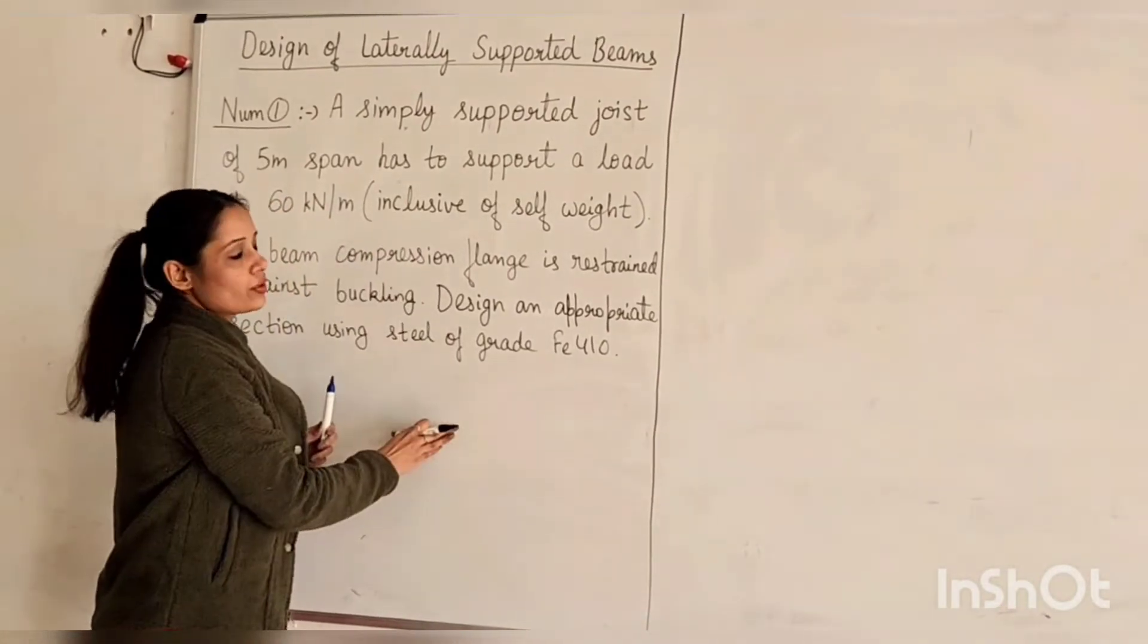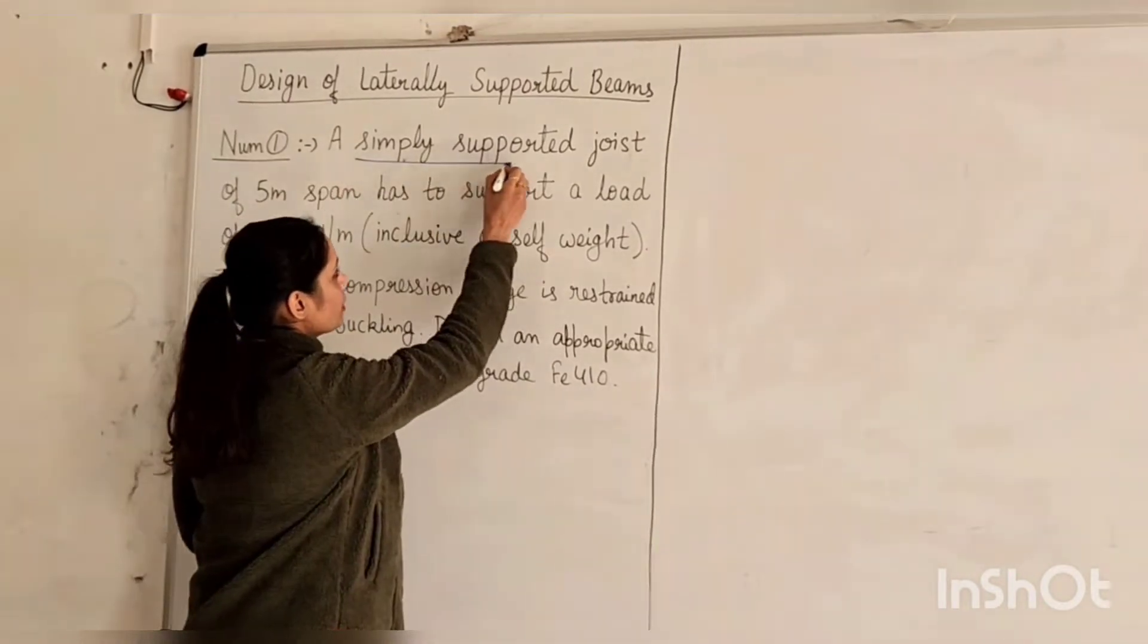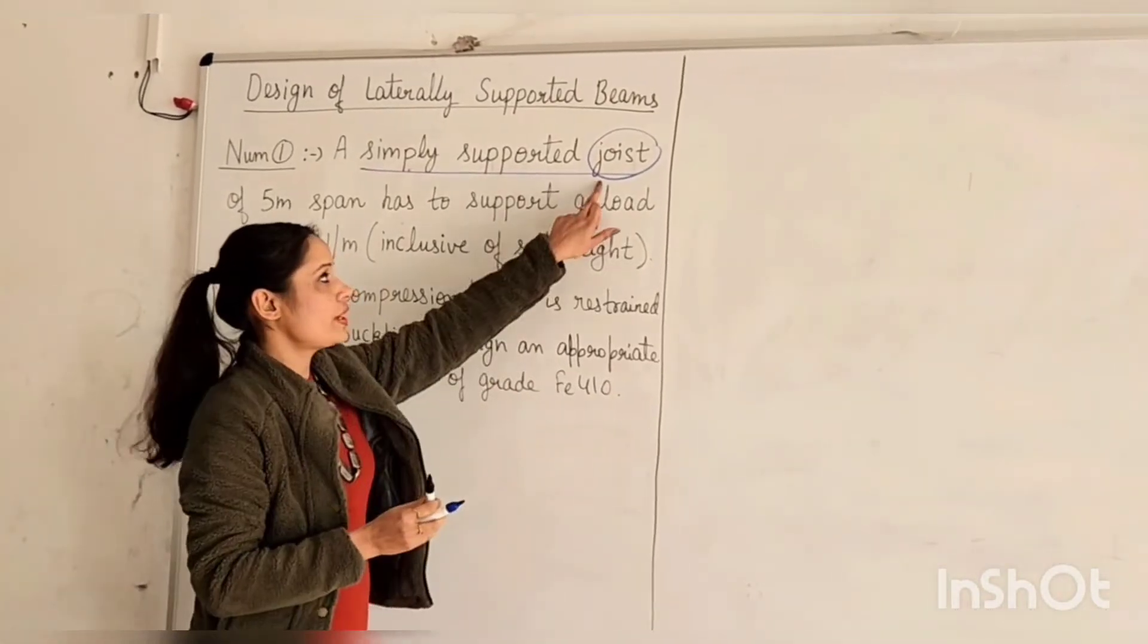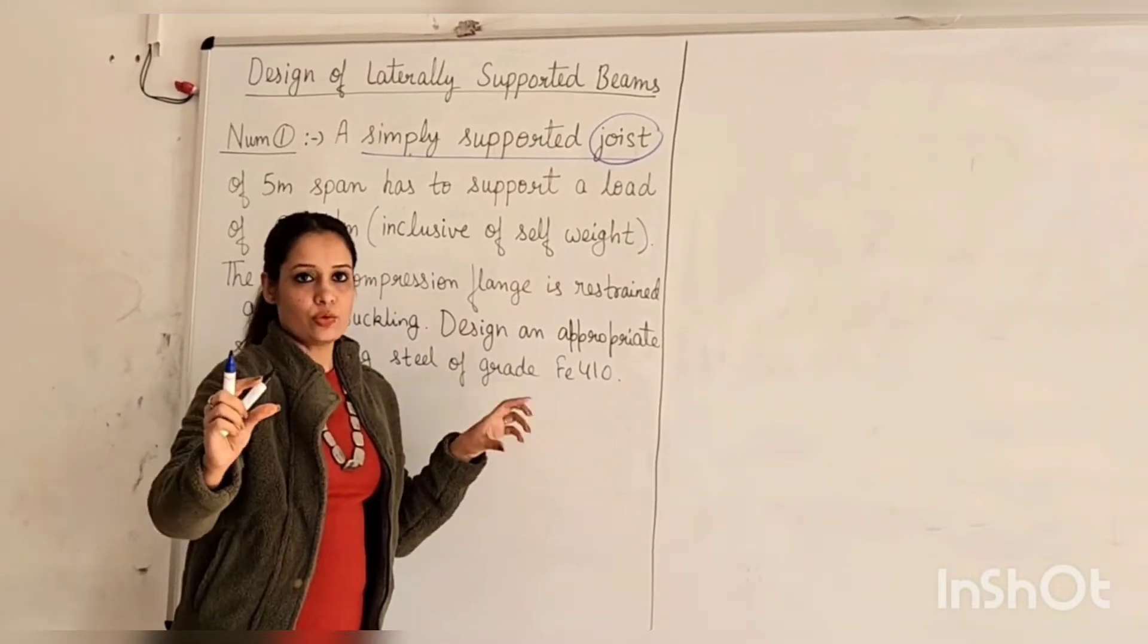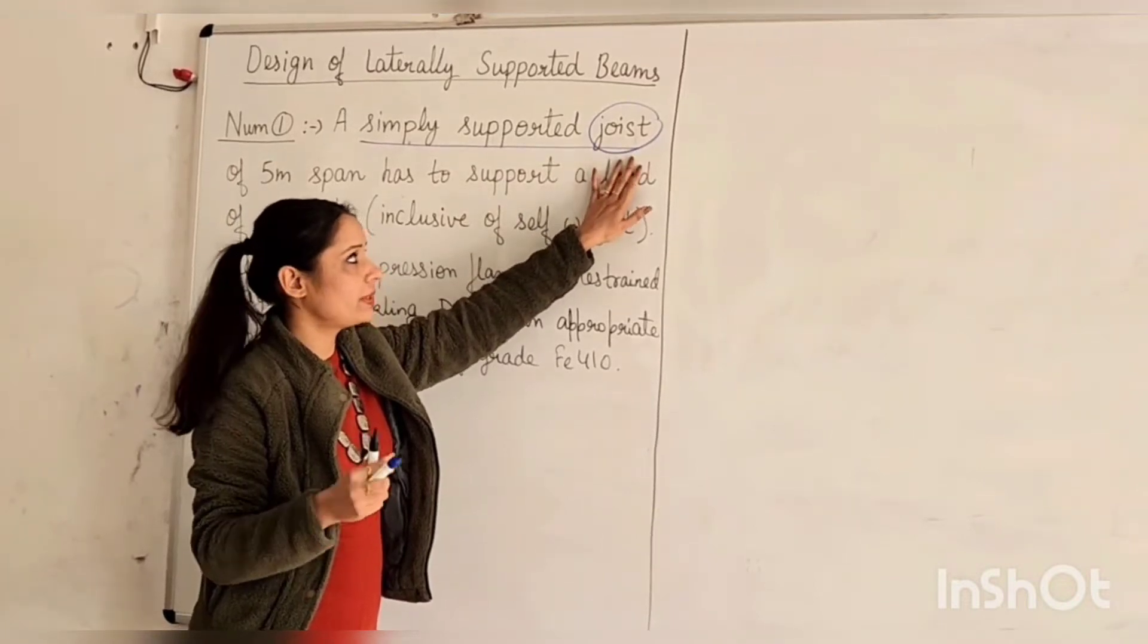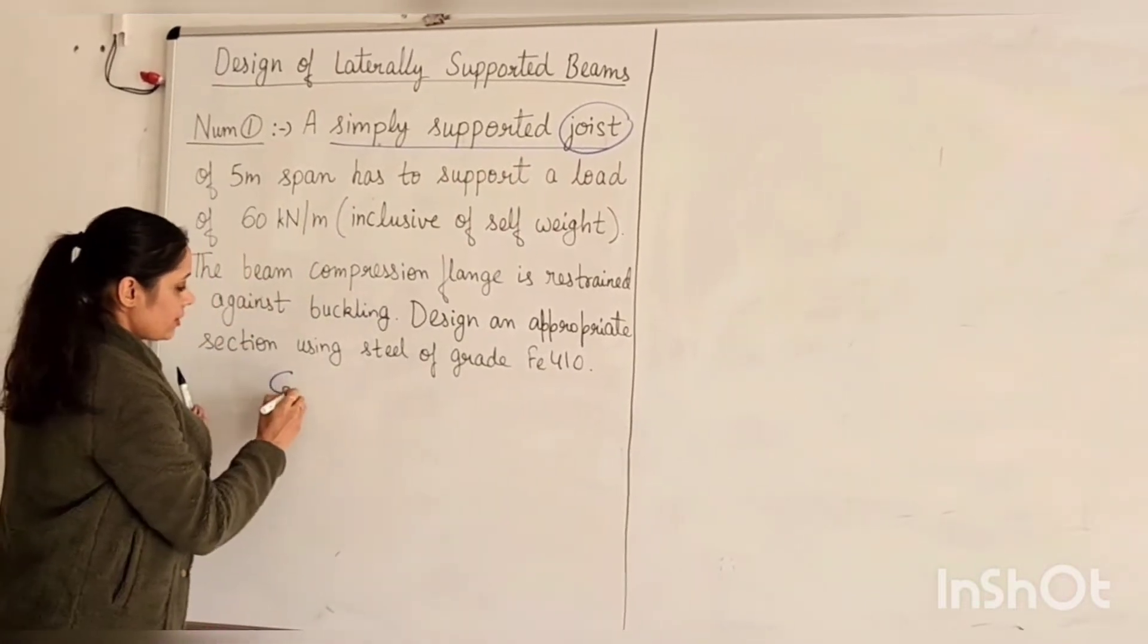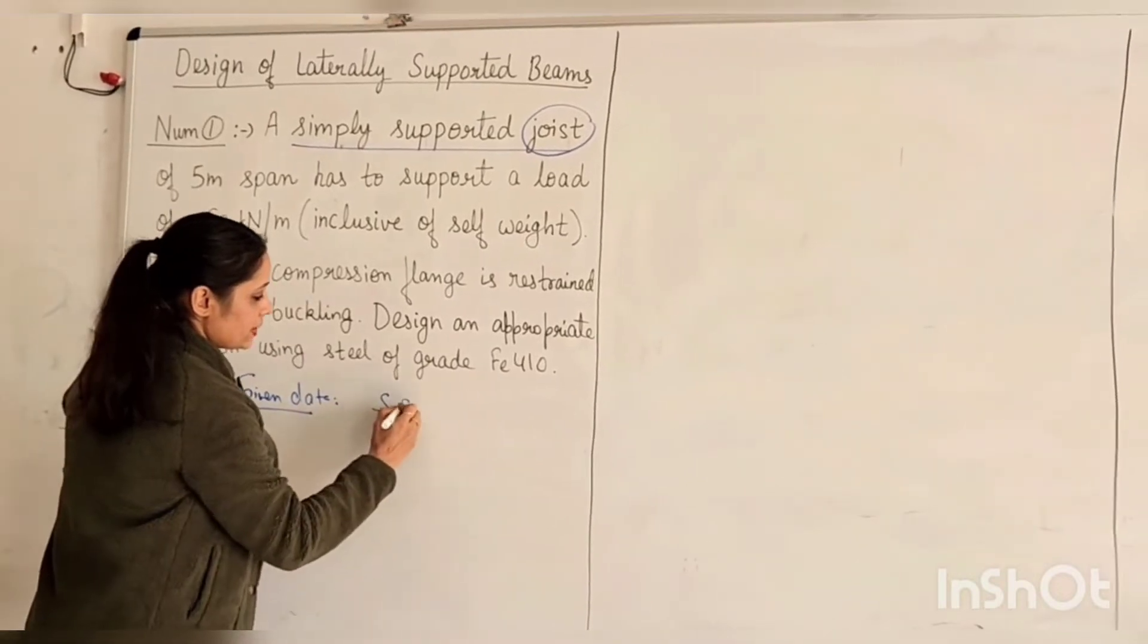We will study the given data in this case. So here you can see the first one is simply supported joist. The question is about the beam. The joist which is used to support your flooring is basically a beam because it supports the floor. And which is simply supported. If you have given data, we can take a little bit more. This is SSB IPD.